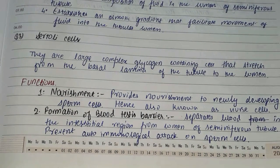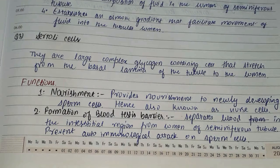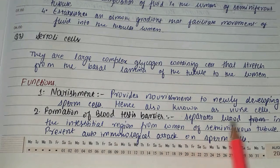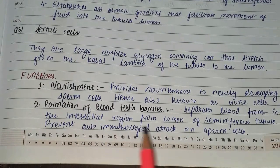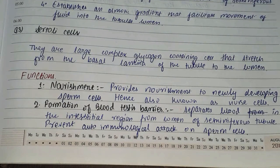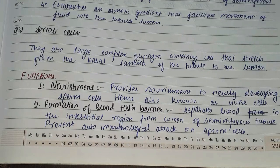They also form the blood-testis barrier, which separates the blood from the interstitial region from the lumen of the seminiferous tubule. This barrier also prevents autoimmunological attack on the sperm cells.